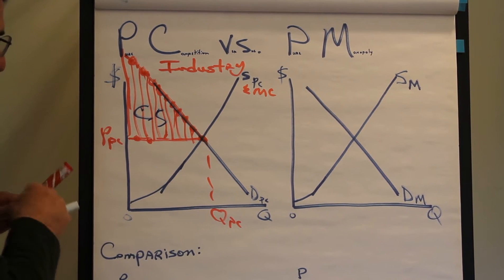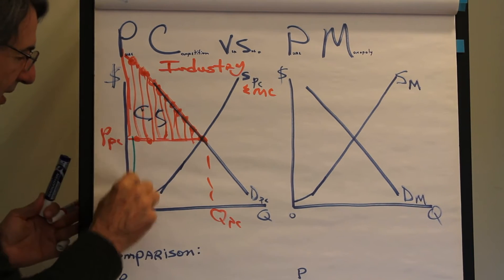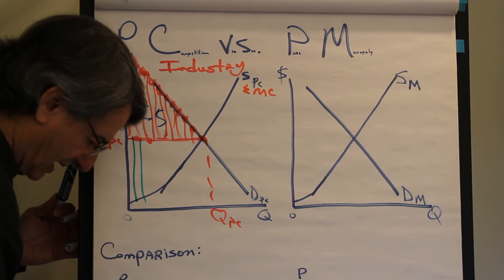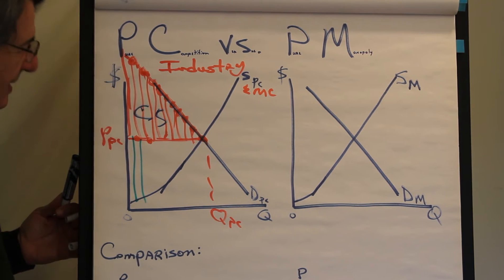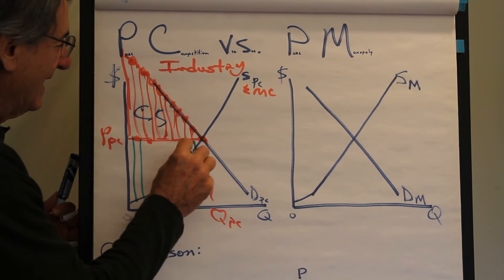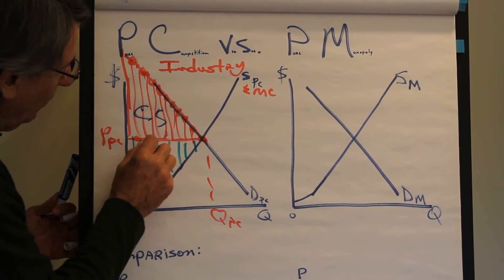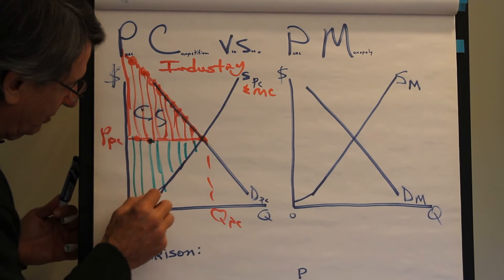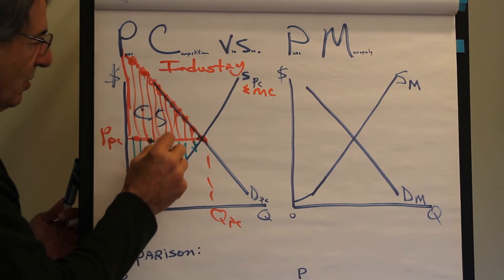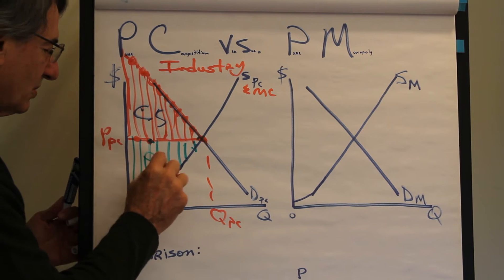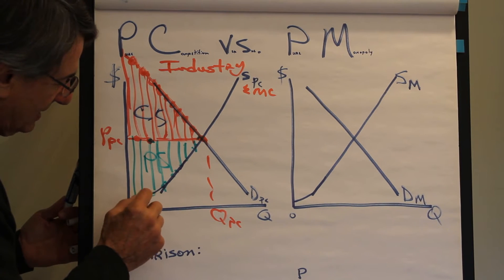Then all of this green stripy area represents producer surplus. That's right. The difference between what they receive and what their opportunity costs are. The supply curve shows you the opportunity costs. So all of this is producer surplus.